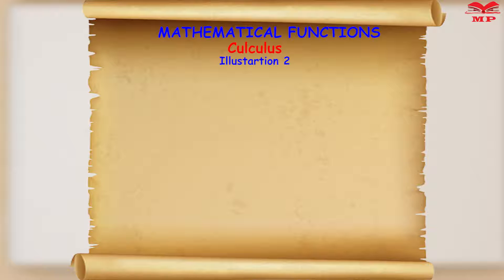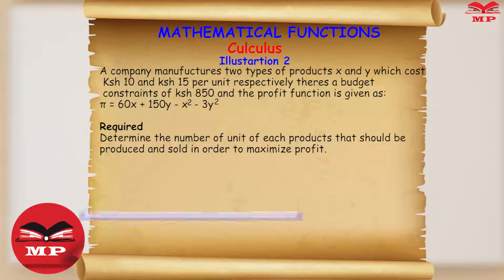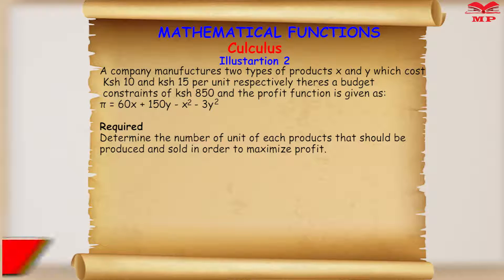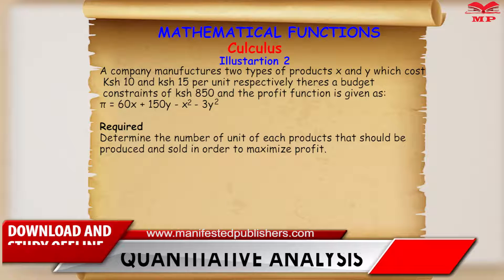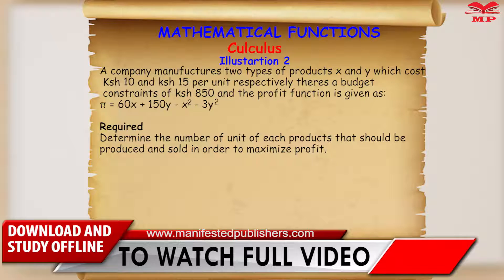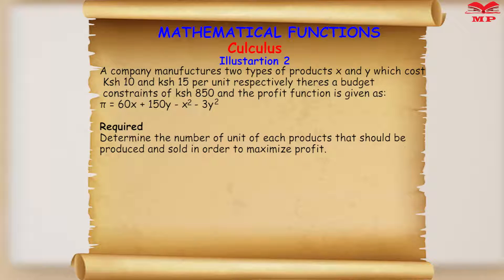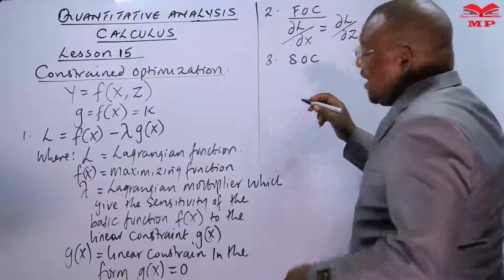Here is an illustration. A company manufactures two types of products, x and y, which cost shillings 10 and shillings 15 per unit respectively. There is a budget constraint of shillings 850, and the profit function is given as π = 60x + 150y − x² − 3y². We are required to determine the number of units of each product that should be produced and sold in order to maximize profit.